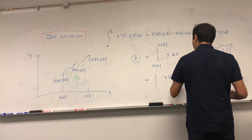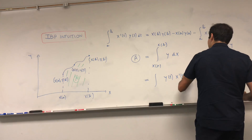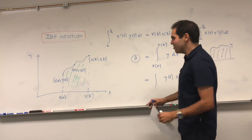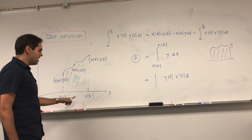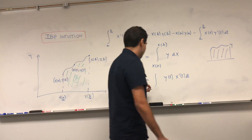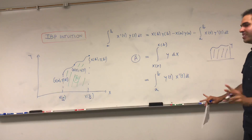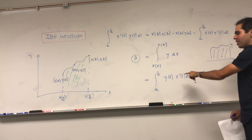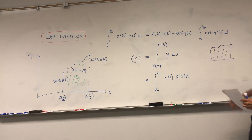So y becomes y of t, and dx becomes x prime of t dt. Because we're dealing with the t variable, we integrate from time a to time b. So the area A is the integral from a to b of y of t times x prime of t dt, which is the term we have here.